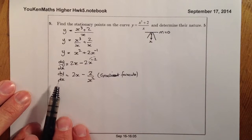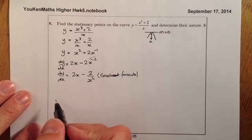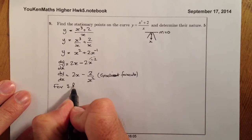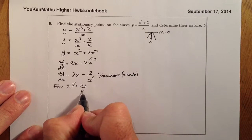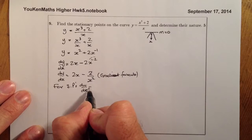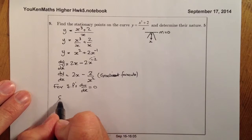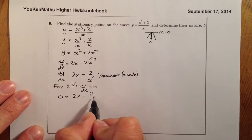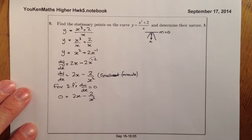I'm going to set the gradient dy by dx equal to 0. So for stationary points, dy by dx — the gradient — equals 0. I'll put a 0 on this side: 0 equals 2x minus 2 all over x squared. From there I just need to try and solve this.